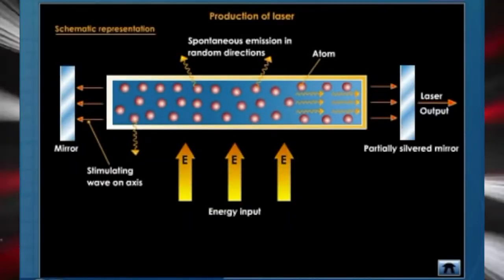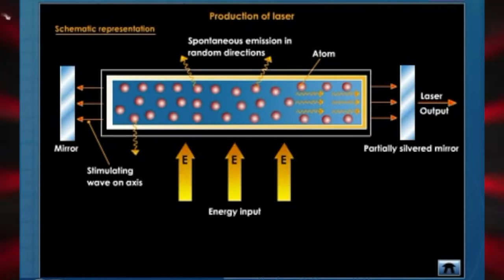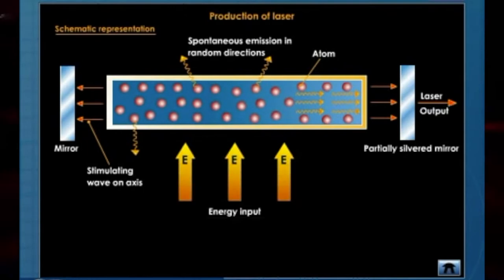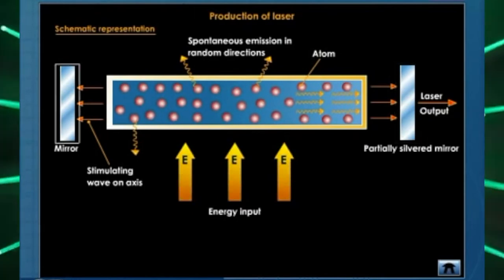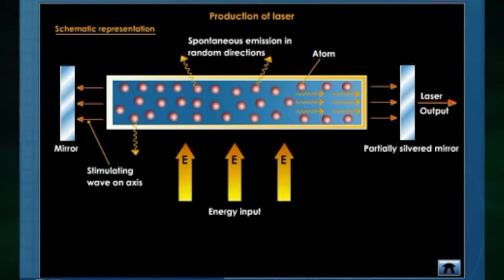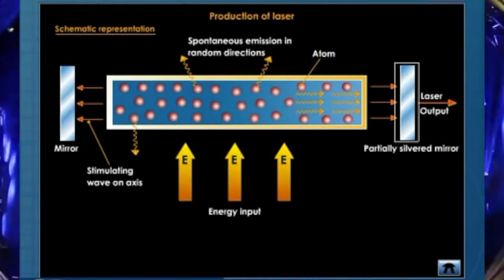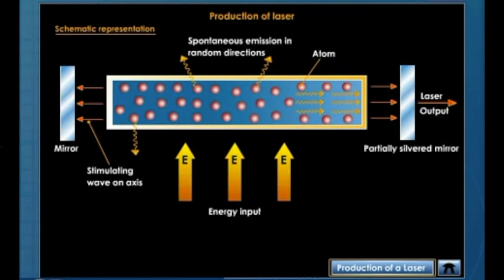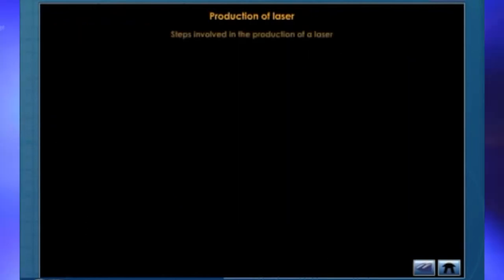Let us understand the laser design with the help of a schematic representation. A laser consists of a tube filled with atoms that form the active medium. An external source of energy pumps the atoms to an excited state. Two reflecting mirrors are placed at the ends of the tube to confine the photons — one mirror is totally reflecting and the other is slightly transparent to allow a part of the laser beam to escape.